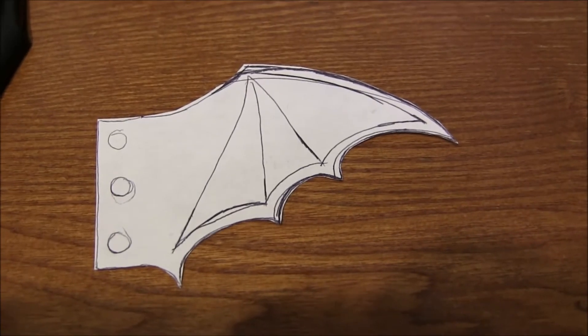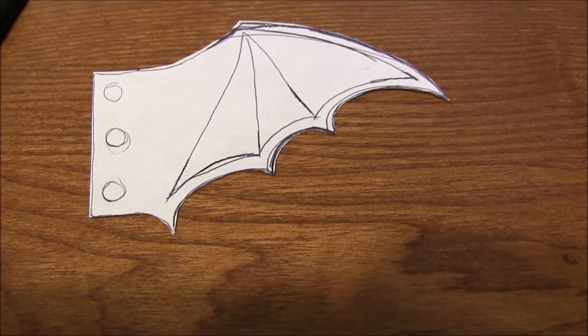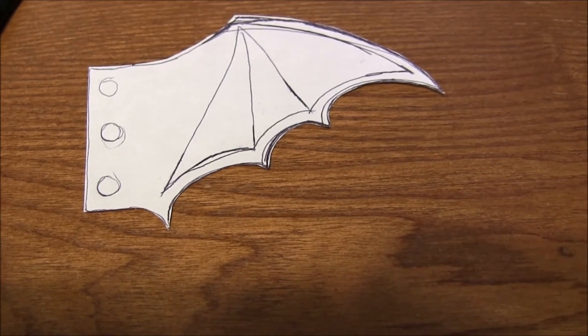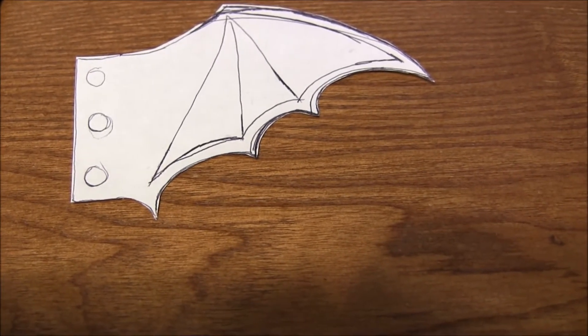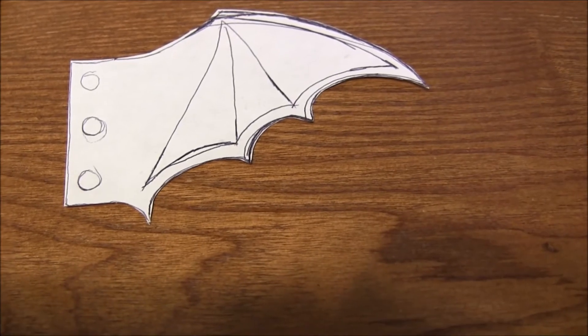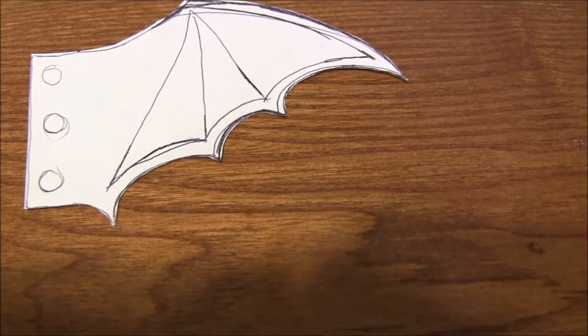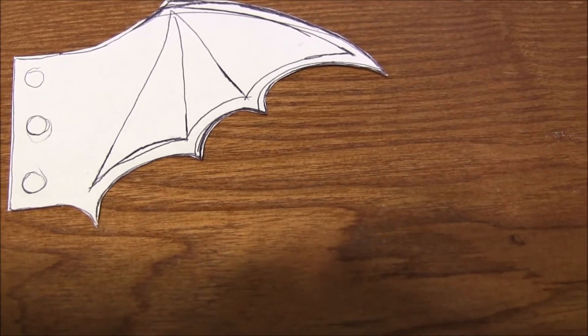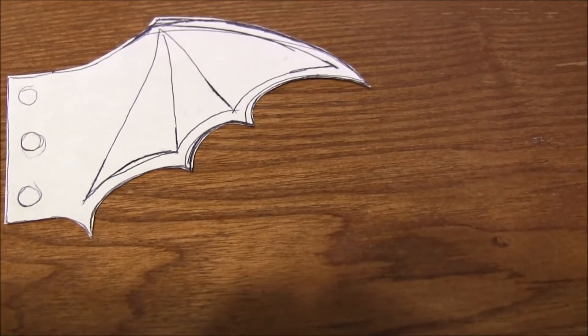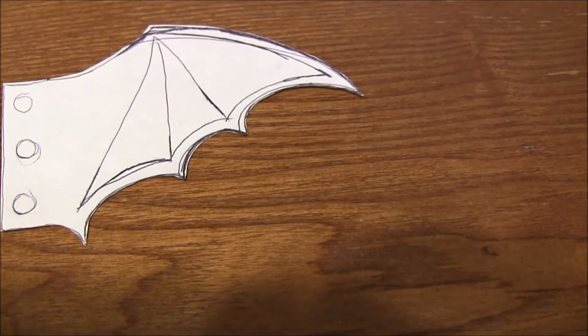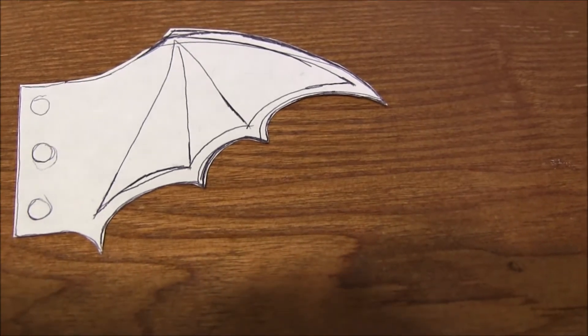When doing a project like this, you want to add seam allowance when you cut out your pattern or fabric. That way you don't end up with something smaller than you originally planned because of sewing seams. If you're going to try this with a sewing machine, add more seam allowance. But if you're sewing by hand like I'm going to do, I feel like I can get better details.